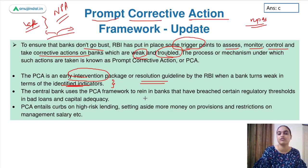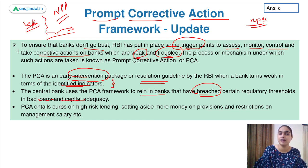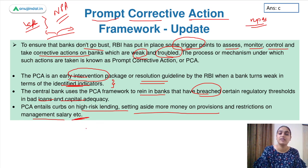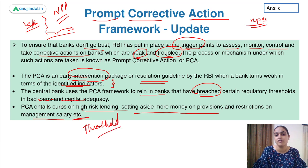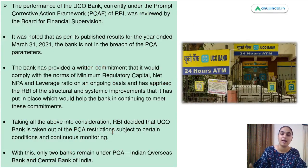The central bank uses this framework to identify banks that have breached regulatory thresholds in bad loans, capital adequacy, and similar parameters. By doing so, it imposes curbs on high-risk lending, requires setting aside more money in provisions, and places restrictions on management salary, among other things. There are different thresholds specified, and if banks don't follow them, RBI will take action against them.